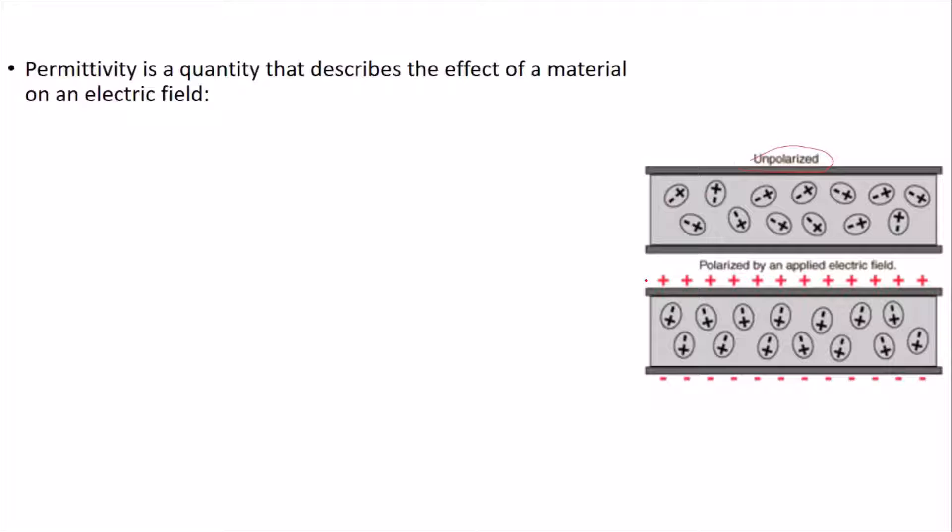The permittivity of any material is the quantity that describes the effect of a material on an electric field. The higher the permittivity, the more the material tends to reduce any field set up in it by getting polarized. If you see over here, we have an external field applied which you can see in the red. We got a plus sign over here on this side of the material, the negative sign on the other side of the material. And due to this, these randomly-oriented atoms and molecules, they try to get polarized.